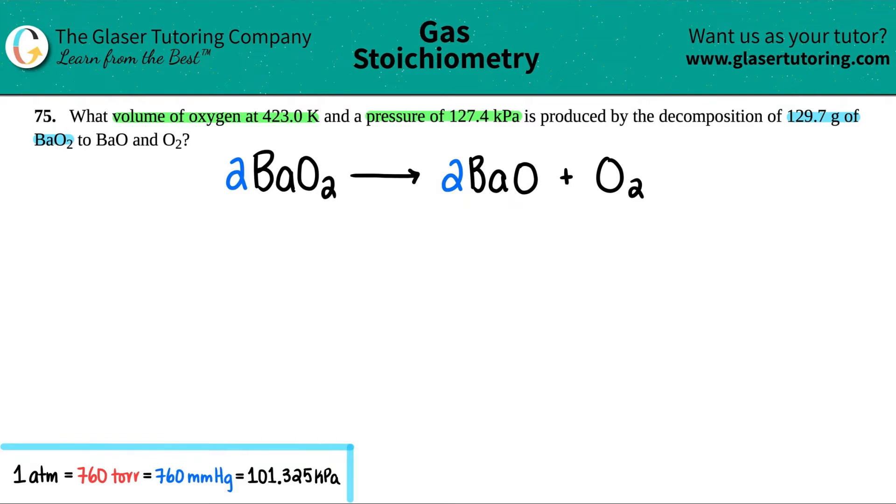Now let's write out all the stuff that we have and what we're solving for. They're asking for the volume of oxygen, which is the O2. They told us what's the volume of this at this temperature, so the volume and this temperature go together. What's the volume of O2 at a temperature equal to 423.0 Kelvin and a pressure of 127.4 kilopascals. And they're telling us that we're decomposing 129.7 grams of BaO2.